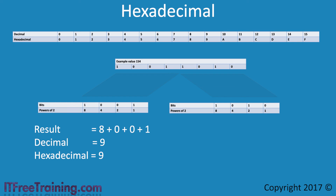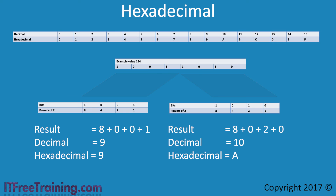If I now look at the right 4 bits, the binary gives the decimal value of 10. Looking this up in the table gives a hexadecimal value of A. To get the final result, I need to combine the left and right sides together. This gives me the final result of 9A. You can see that the conversion process is not too difficult when you know how. If you want to convert the other way, it is a simple matter to reverse the process.